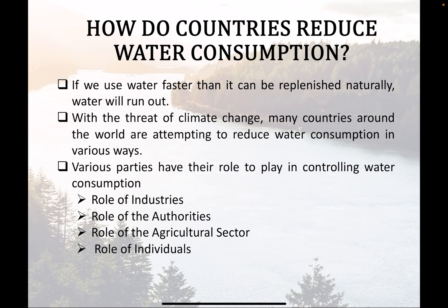Climate change adds another layer of complexity. While water is a closed loop and the total amount on Earth stays the same, more humans means more water locked in bodies, and climate change means more water locked in the atmosphere, groundwater, or polluted surface water. The total amount available for consumption is greatly reduced. Everyone — from individuals to authorities to agriculture and industry — has a role to play in controlling water consumption.